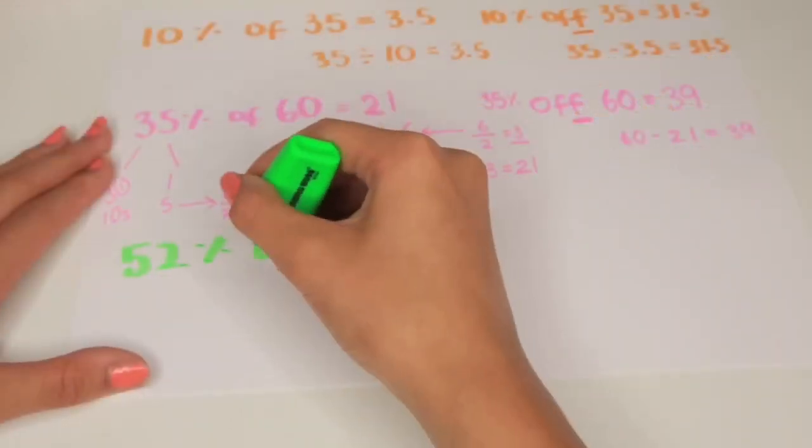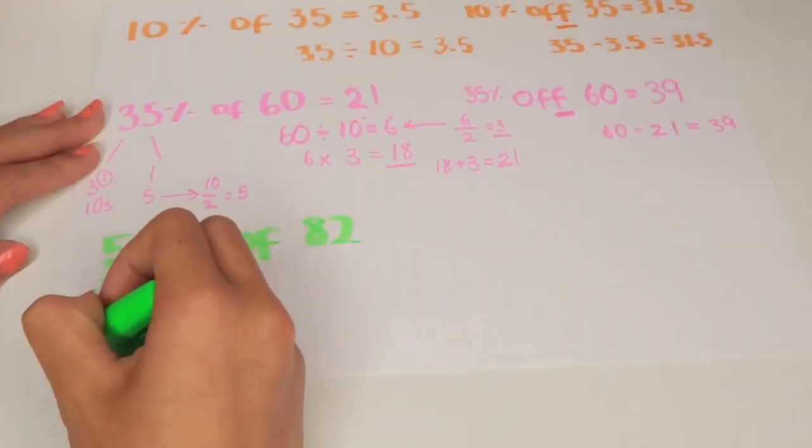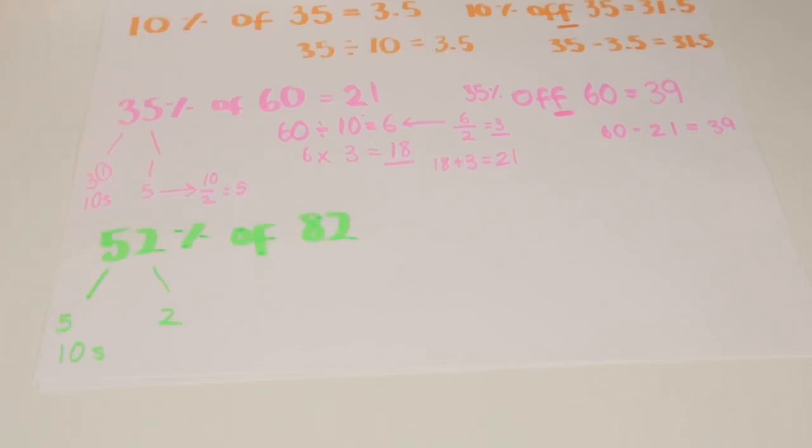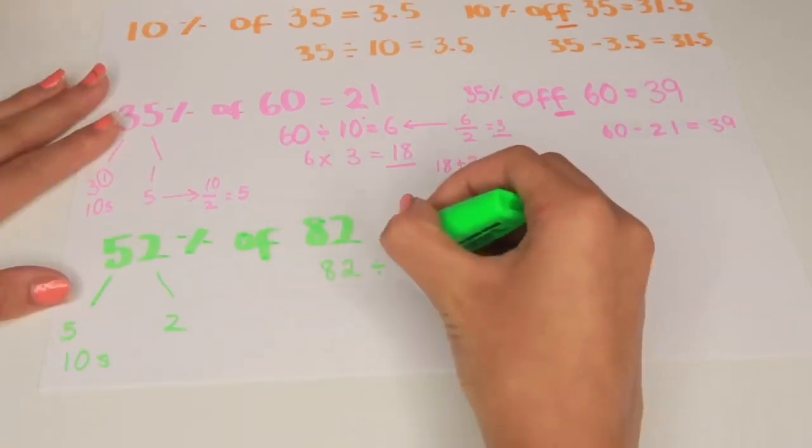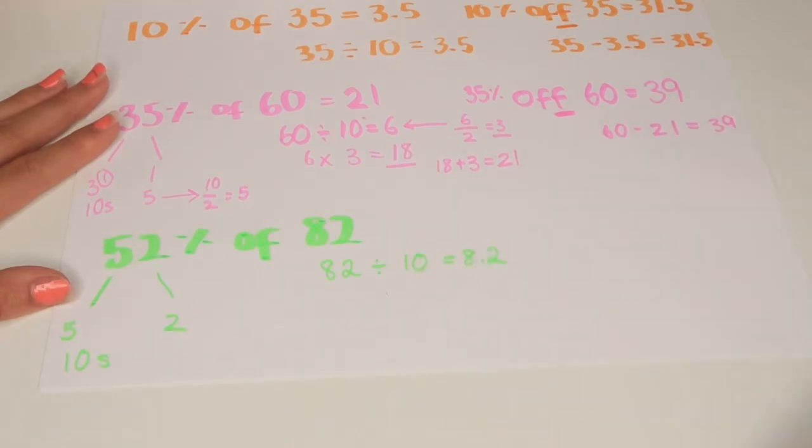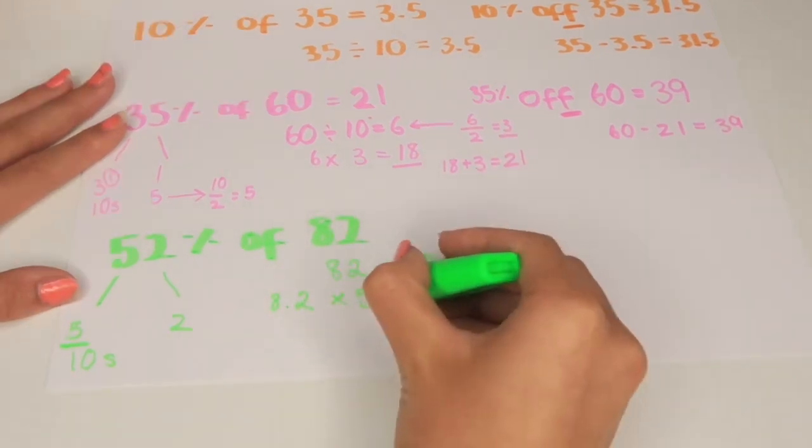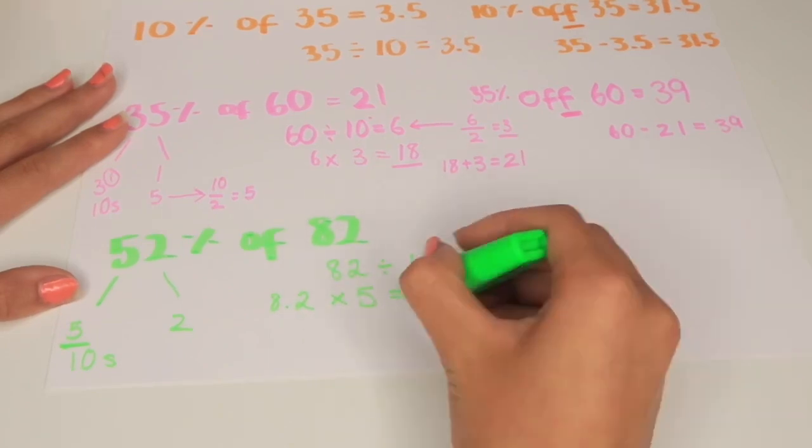52% of 82. We know that 50 has 5 lots of 10s and a 2. First of all we do 82 divided by 10 which gets us 10%, 8.2. We then do 8.2 times 5 which is 41.